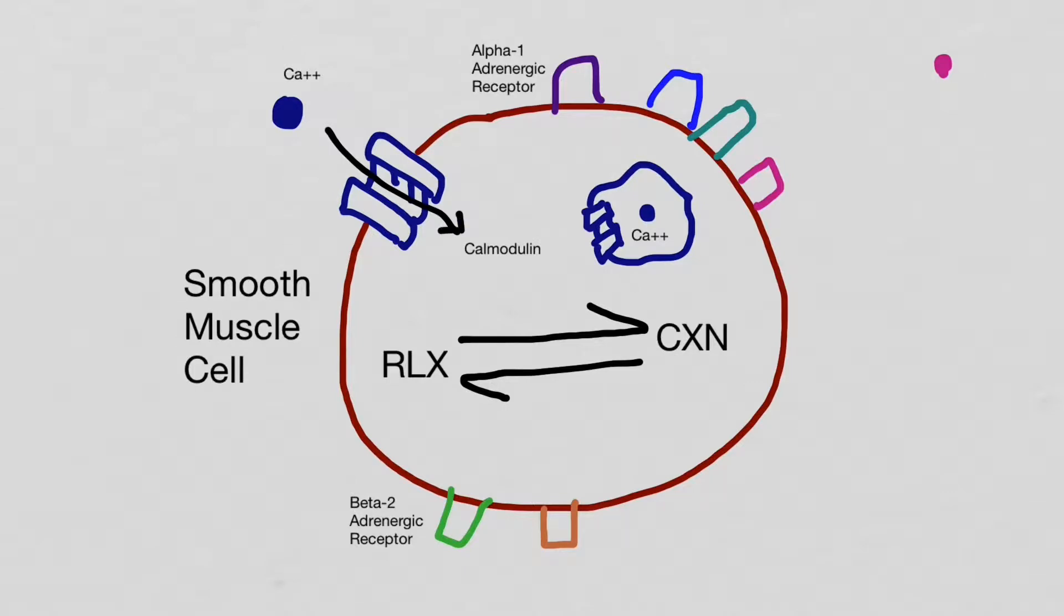Smooth muscle will contract when calcium comes from the extracellular fluid or calcium is released from the sarcoplasmic reticulum. The calcium will combine with calmodulin and move the smooth muscle into a contracted state.